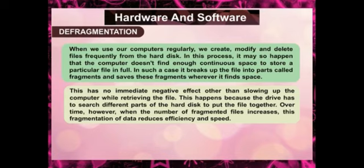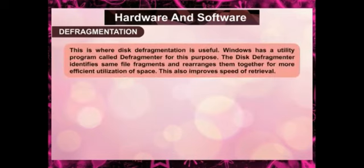Over time, however, when the number of fragmented files increases, this fragmentation of data reduces efficiency and speed. This is where disk defragmentation is useful. Windows has a utility program called Defragmentor for this purpose. The disk defragmentor identifies file fragments and rearranges them together for more efficient utilization of space, which also improves the speed of retrieval.